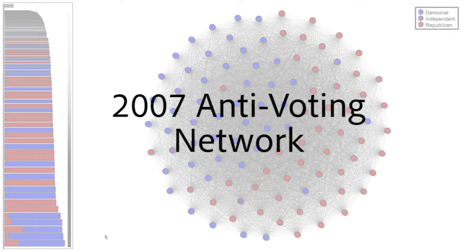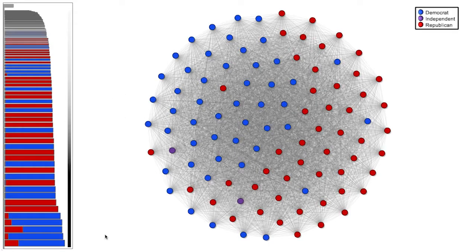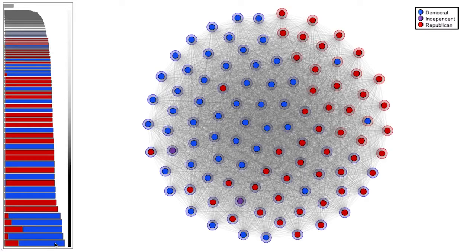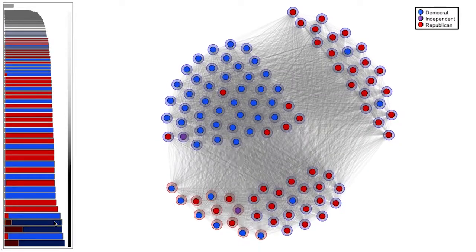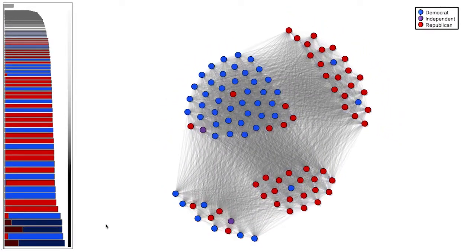Our next dataset is the US Senate 2007 anti-voting network. Here, edges are weighted by how frequently two Senators voted differently. This time, we select high persistence bars from the barcode that most evenly split the Republican and Democrat groups.